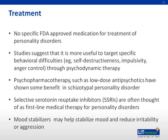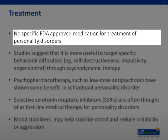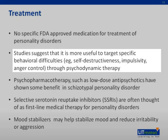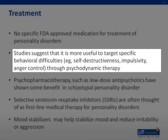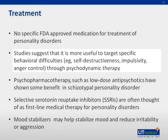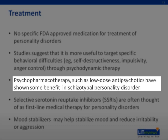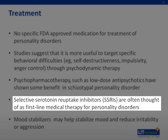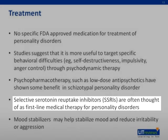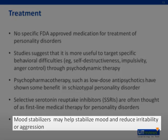There are no specific medications approved by the FDA for the treatment of personality disorders. However, patients who present with personality difficulties not infrequently have other psychiatric disorders, including depression and substance abuse, that should be addressed with appropriate pharmacological treatment. Some studies suggest it is more useful to target specific behavioral difficulties — for example, self-destructiveness, impulsivity, and anger control — through psychodynamic therapy. Psychopharmacotherapy, such as low-dose antipsychotics, has shown some benefit in schizotypal personality disorder. SSRIs are often thought of as a first-line medical therapy for some personality disorders. Mood stabilizers may help stabilize mood and reduce irritability or aggression.